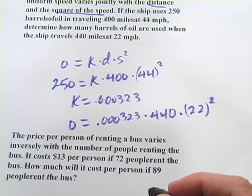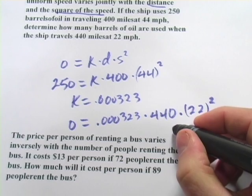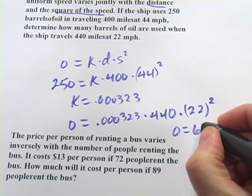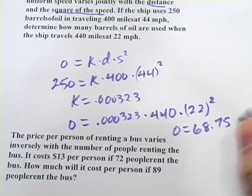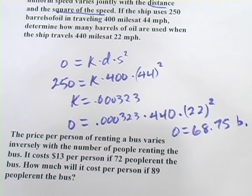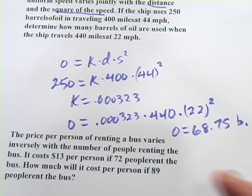And if you crunch that out on your calculator, I think you get 68.75 barrels of oil. All right, let's try one more.